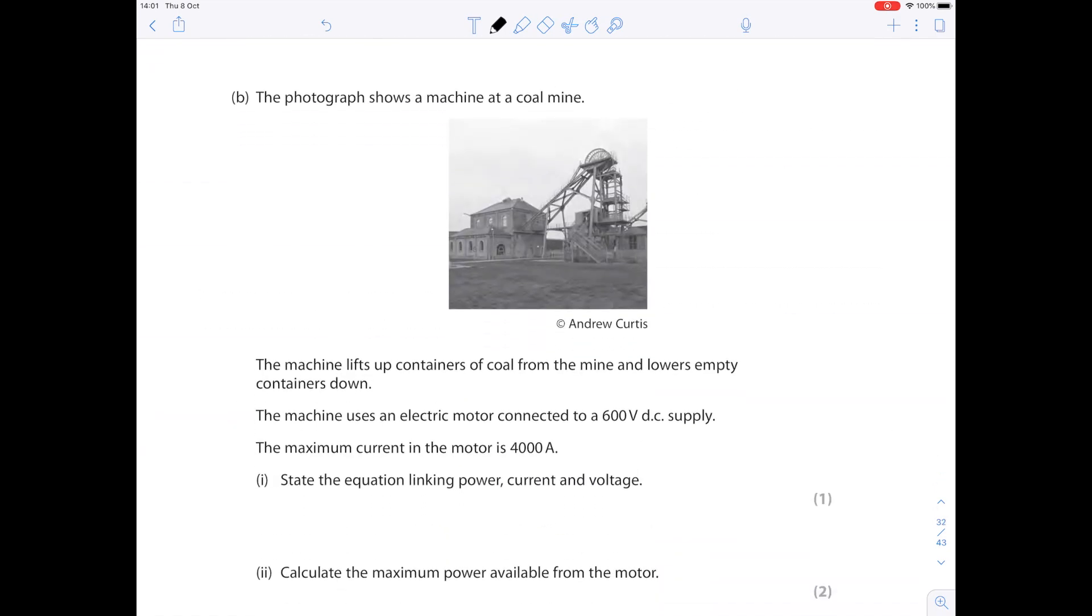Okay, so now we're getting into the maths part of this. The photograph shows a machine at a coal mine. The machine lifts up containers of coal from the mine and lowers empty containers down. The machine uses an electric motor connected to a 600 volt direct current supply. The maximum current in the motor is 4000 amps. State the equation linking power, current and voltage. So I'm just going to make some notes to myself. We know that we've got a voltage of 600 volts. We know that we've got a current of 4000 amps.